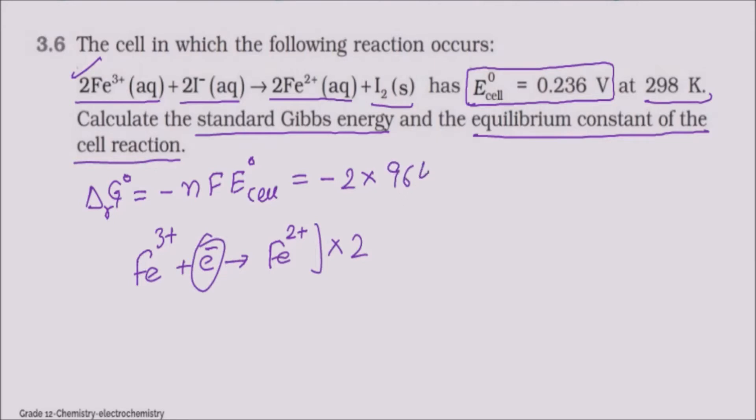And F value is 96,487. And E°cell value is 0.236. 2 into 96,487 into 0.236. So the G value is 45,542 joule per mole, or 45.542 kilojoule per mole.